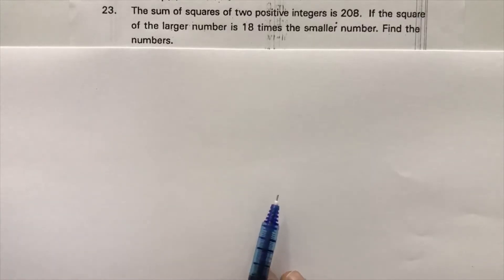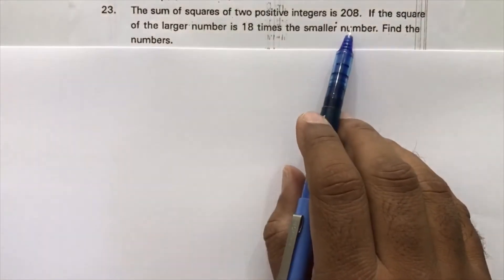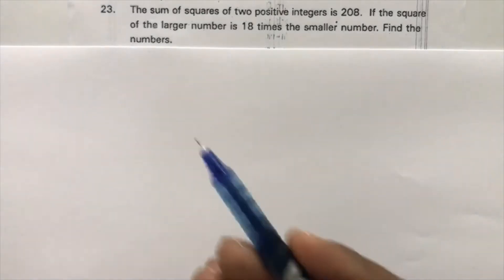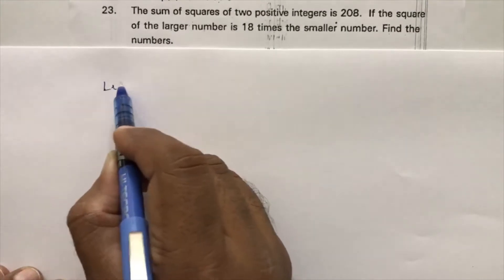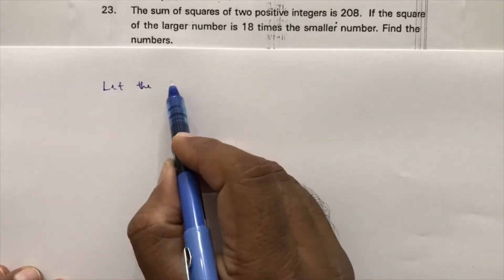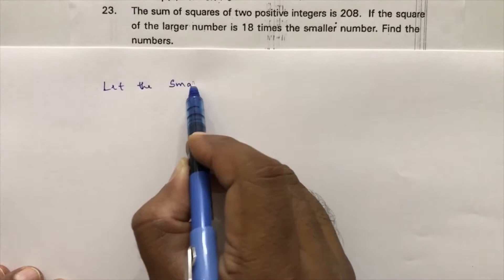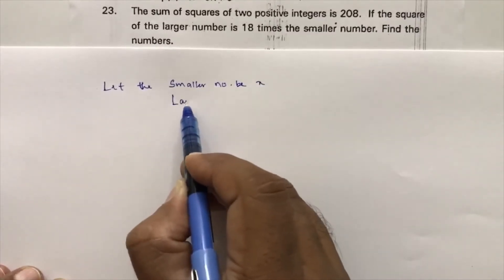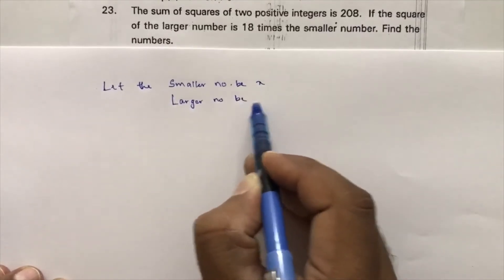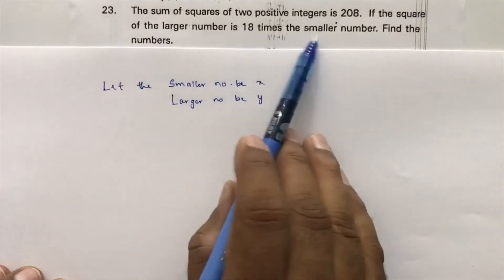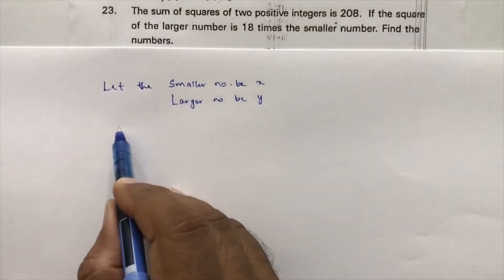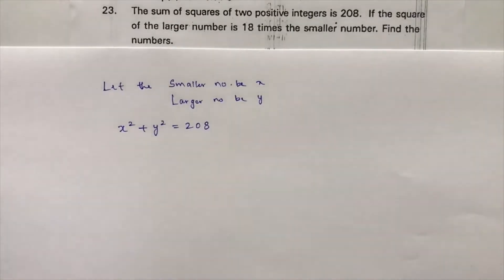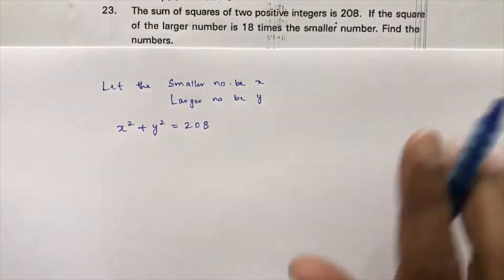The sum of the squares of two positive integers is 208. If the square of the larger number is 18 times the smaller number, let the smaller number be x and the larger number be y. So the first equation is: x squared plus y squared equals 208.